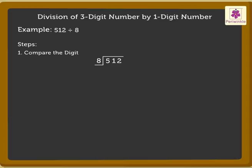We compare the leftmost digit of the dividend with the divisor. Here the leftmost digit is the digit in the hundredths place, that is 5. 5 is smaller than 8. So, we consider the digits 51 together. Here, 51 is greater than 8.